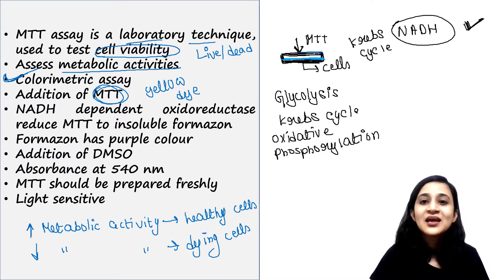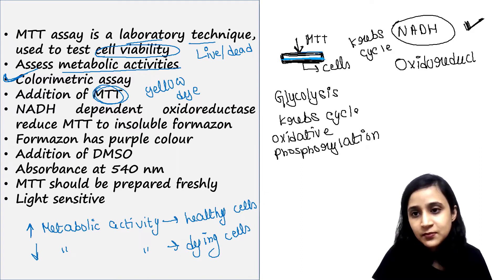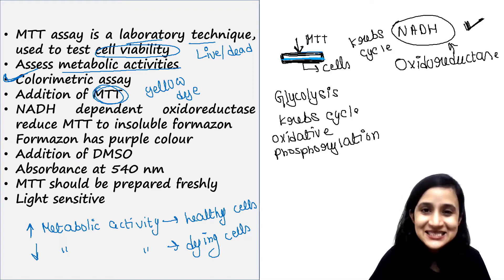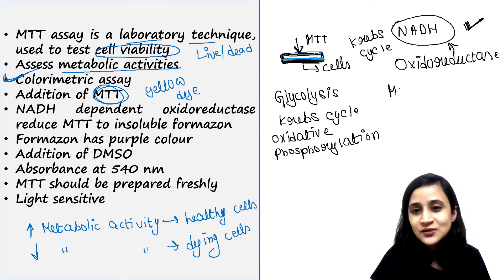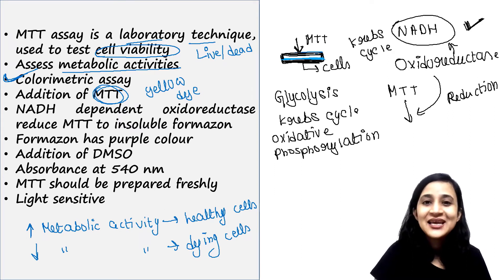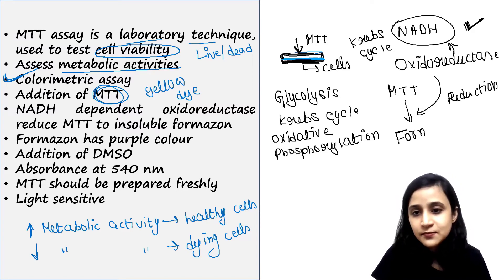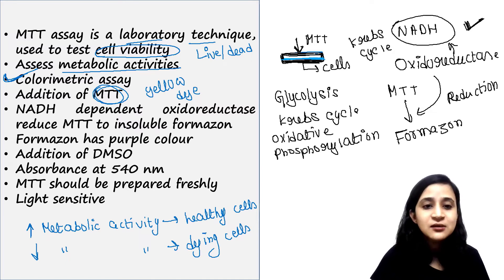There are some enzymes dependent on NADH — one of them is oxidoreductase. In the presence of NADH, oxidoreductase reduces MTT into formazan. Formazan is insoluble and has a purple color.